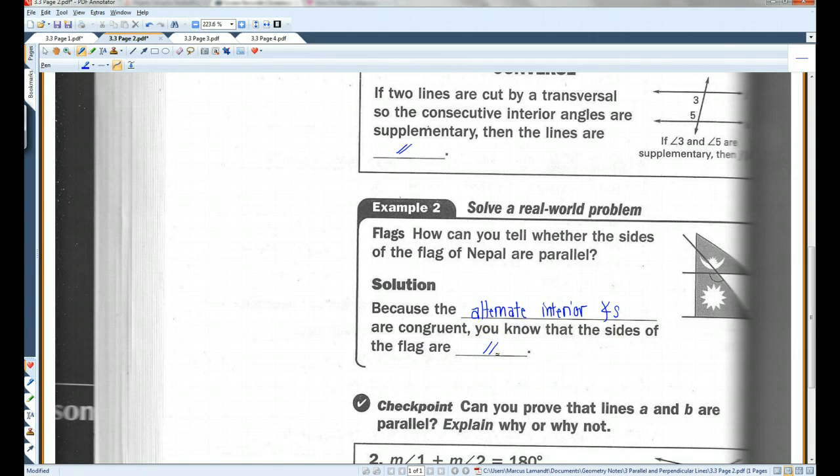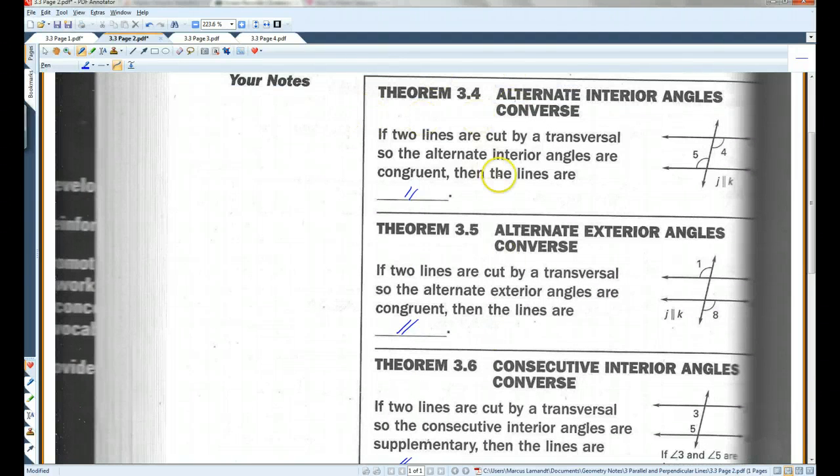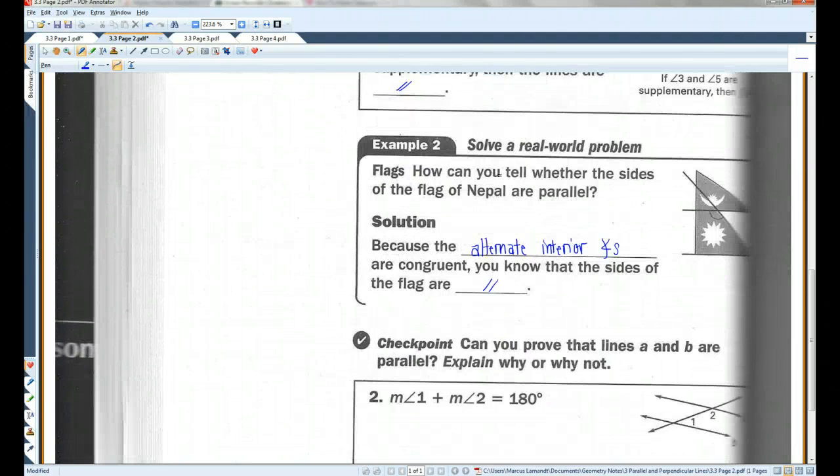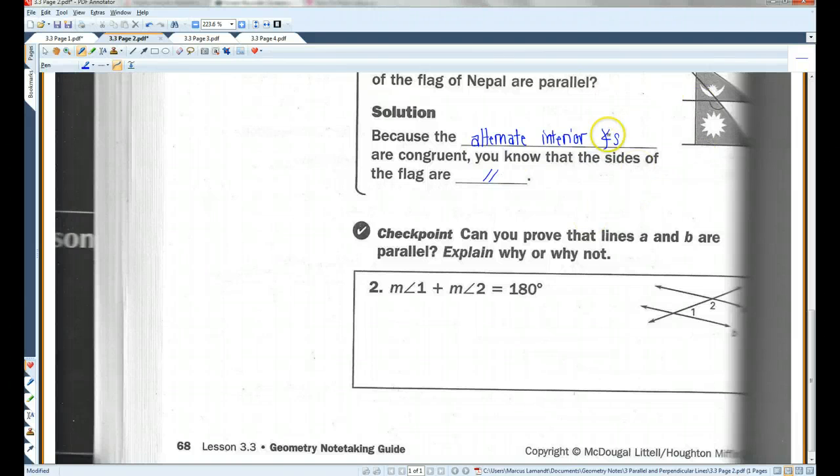Okay? And that is theorem 3.4, alternate interior angles converse. Alright, you guys go ahead and do this checkpoint. Let's go on to page 3.